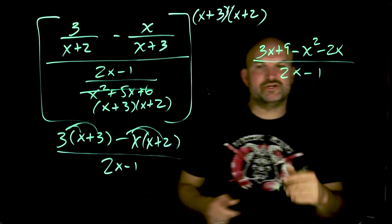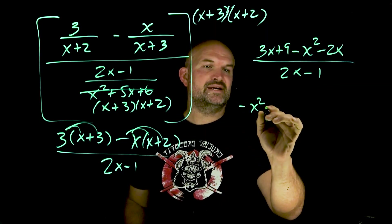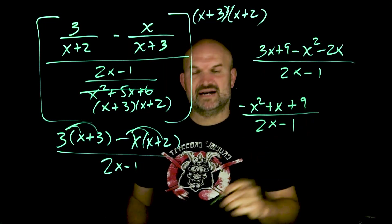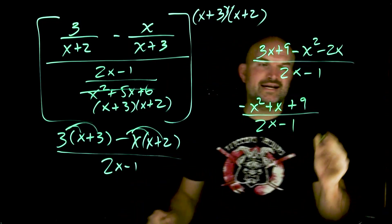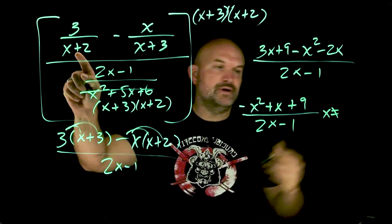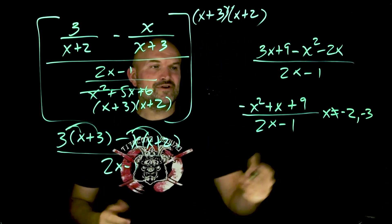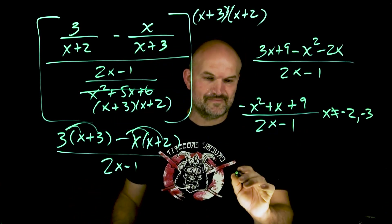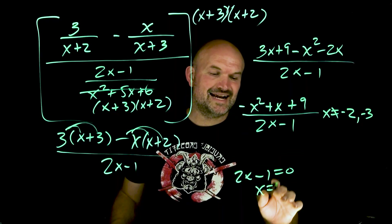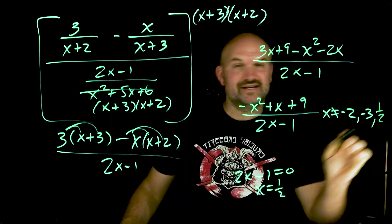Now let's apply a little distributive property. That's going to leave me with 3x plus 9, negative x — so that's negative x squared minus 2x — all divided by 2x minus 1. Now we can combine some terms: negative x squared, and 3x minus x is a positive x, giving us negative x squared plus x plus 9 divided by 2x minus 1. We know x cannot equal negative 2, x cannot equal negative 3. And from our simplified solution: set 2x minus 1 equal to 0, add 1 divided by 2 — x cannot equal 1 half.